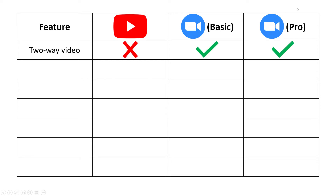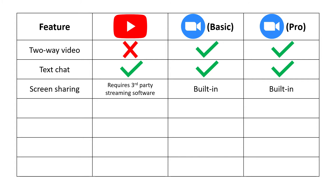First and foremost, two-way video communication: if you need that, YouTube is simply not the right platform. It is only one-way video streaming from you to the viewer — there is no video or audio from them back to you. However, if you can get away with just text chat, that is available on both platforms. If you need to do screen sharing, it's not impossible with YouTube — tons of people stream gaming videos and other content — but it requires third-party streaming software and is more complicated to set up, as opposed to Zoom which has a built-in share screen button.